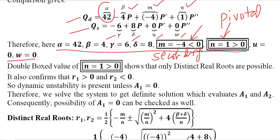N is in the double box which means it has pivotal importance as we understood in the last video. So if we talk about the pivotal factor N, it shows that it is a positive value, 1 is a positive value.